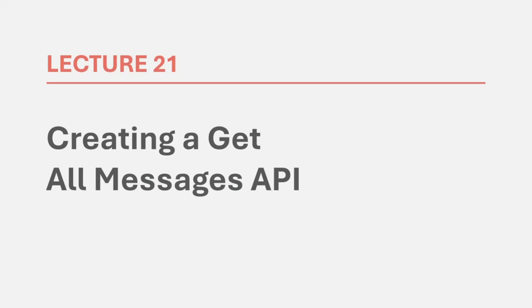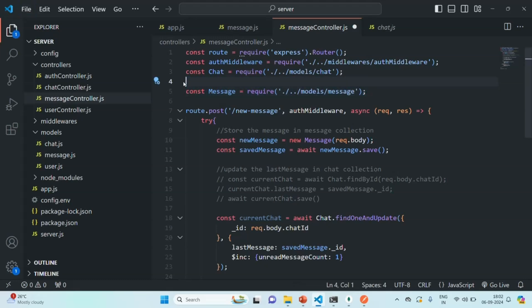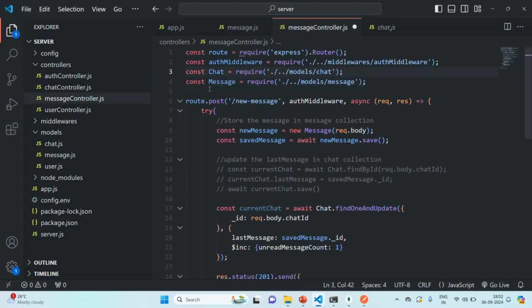In this lecture, we are going to create another API to fetch all the messages of a chat between two users. Let's go to the message controller file. In this file, I am requiring the message model two times, so I will remove the duplicate statement and keep just one.